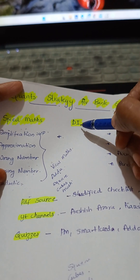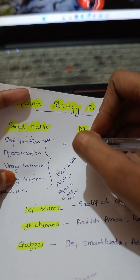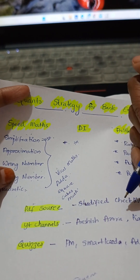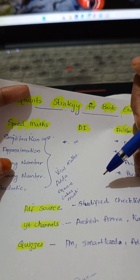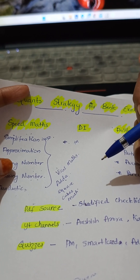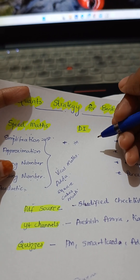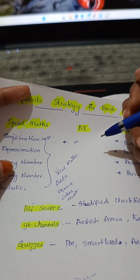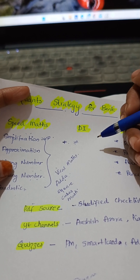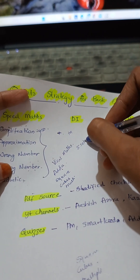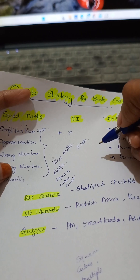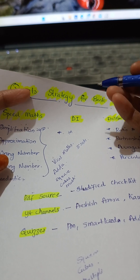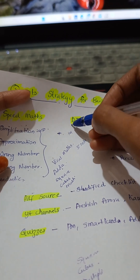Next, let's talk about DI. In DI, we have different types: tabular DI, column, bar graph, pie chart, and KSL DI — there are different types. If you are a beginner, you can go to various YouTube classes; I will pin YouTube class links in my description. You can see five sets of DI — that will be enough if you're a beginner. Or else you can practice by doing sectional tests or mock tests. That will be enough for DI.